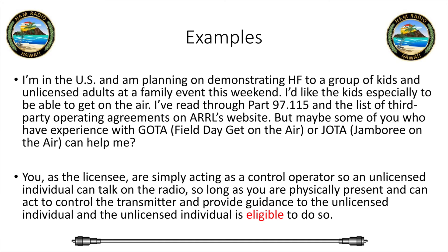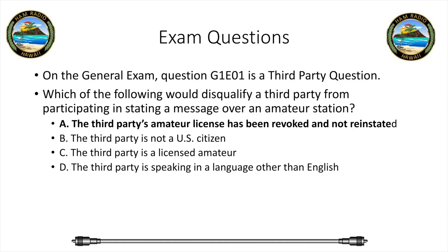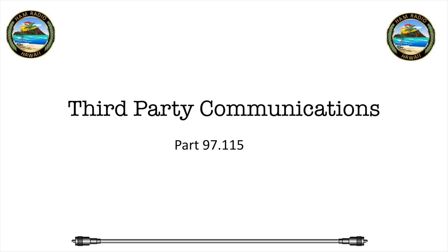You'll see this on the exam. The General exam has a question: 'Which of the following would disqualify a third party from participating in stating a message over an amateur station?' The answer is A — a third party's amateur license has been revoked and not reinstated. Remember, you can't pass a communication for a third party if they've been revoked or suspended. Hopefully this has cleared up questions about third-party communication. Yes, you can pass it, but there are rules in 97.115 that you need to follow. Hope this helps.